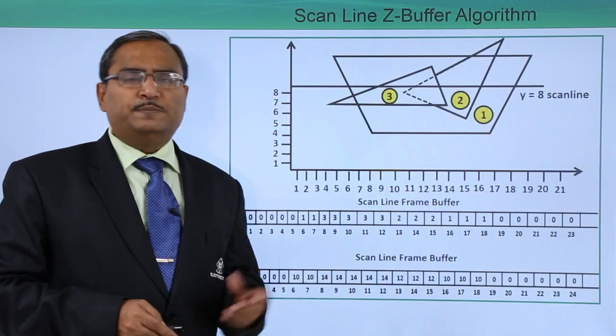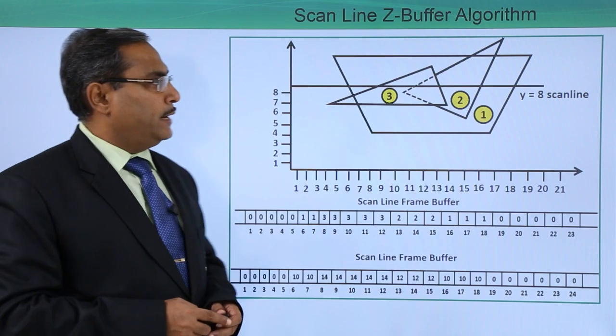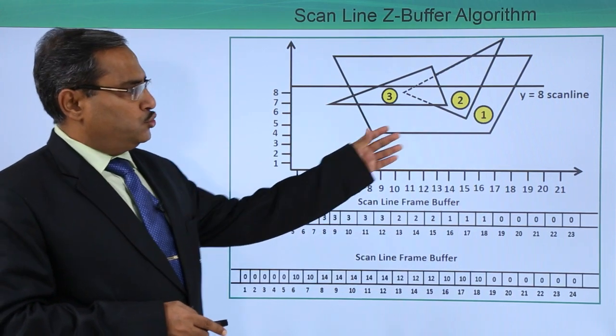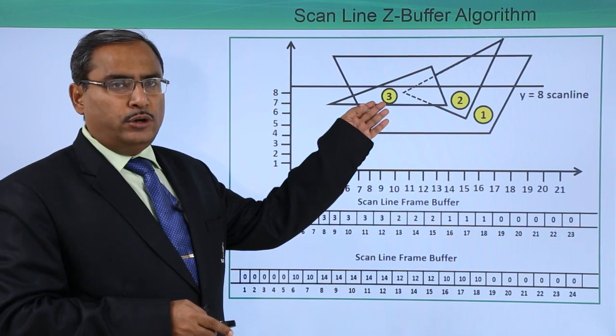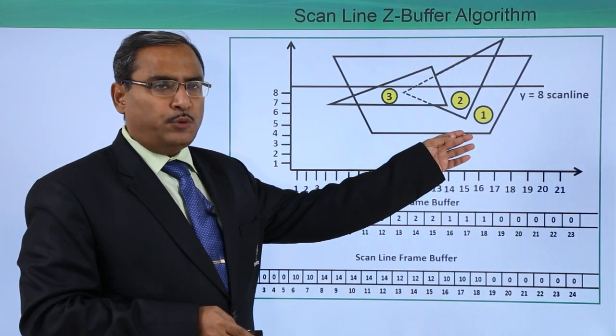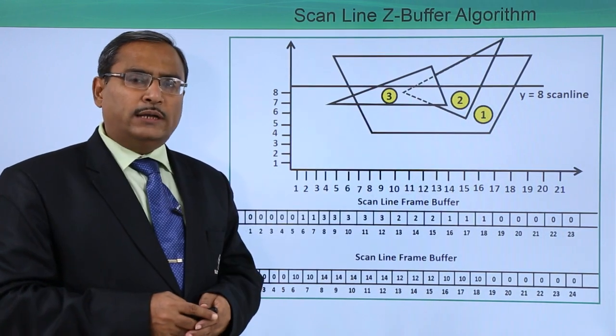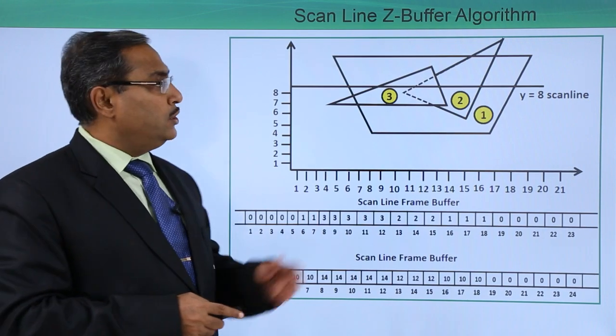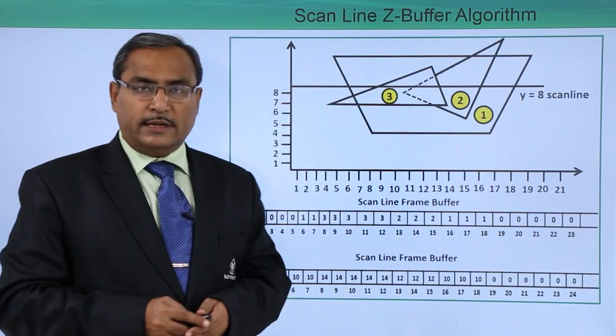Let me explain this algorithm with a proper example. Here we are having three polygons: at the top we have polygon 3, then polygon 2, and then polygon number 1. Here we have one scan line with y equal to 8, which is constant. That is why you are getting a horizontal line here.